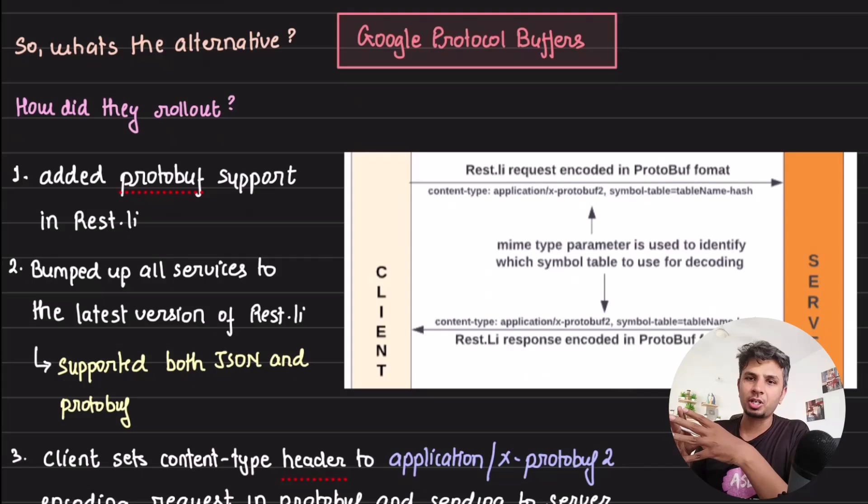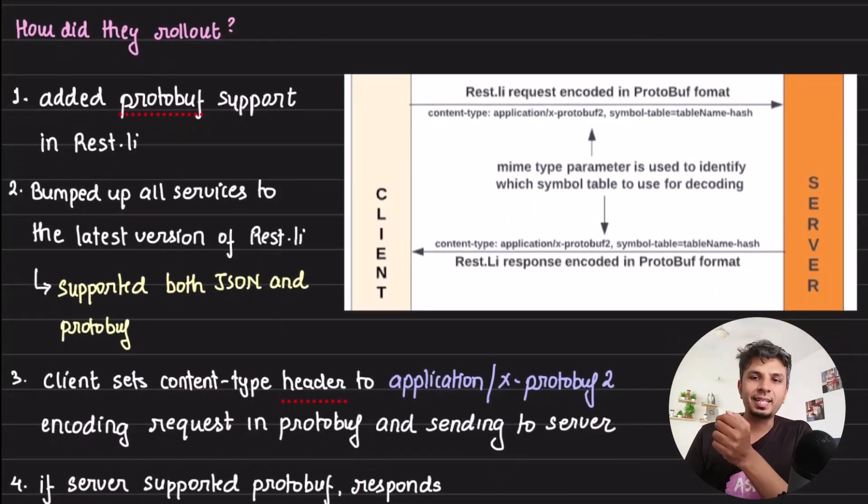But what did they do? Instead of using JSON, LinkedIn used Google Protocol Buffers. But how did they roll out? Because thinking about using it is okay, doing a prototype is okay, but how do you ship this thing in production? So their rollout approach was very simple and effective. First of all, because they were using REST.li, what they did is they added the support for protobuf as their serialization format and upgraded the version of REST.li in open source variant. Then for all of the services that were using REST.li, they all bumped up their versions. They did not move to protobuf, they just bumped up their version. So now all the clients or everybody who is on REST.li can support protobuf if they want to.